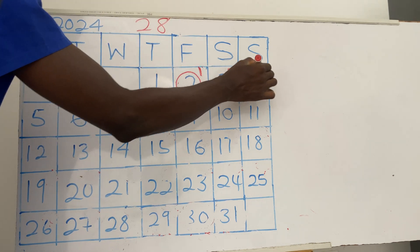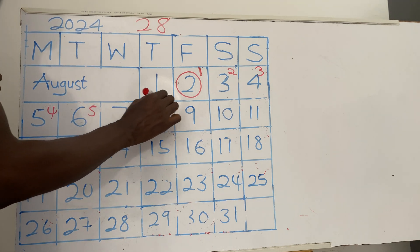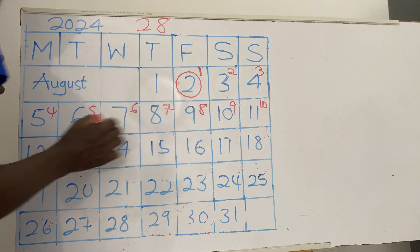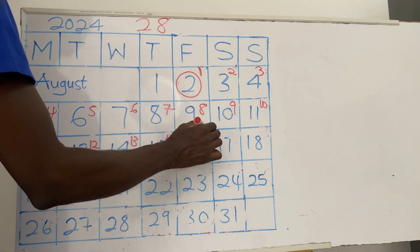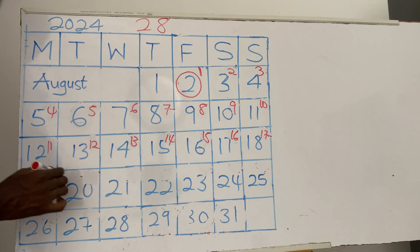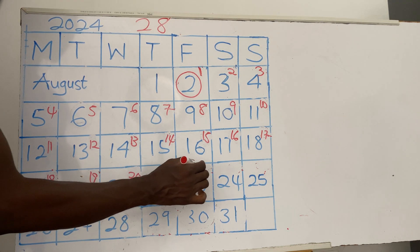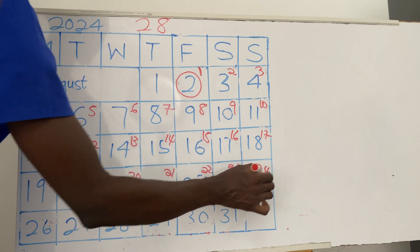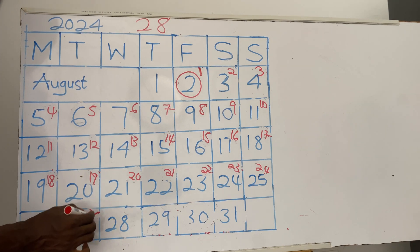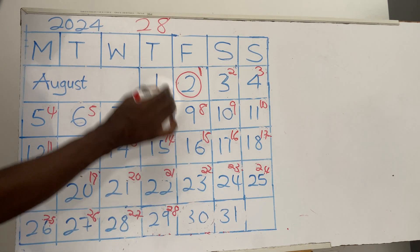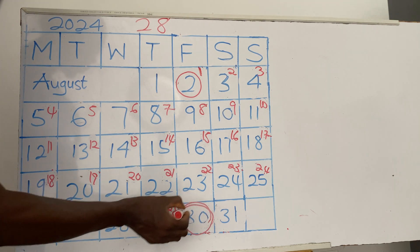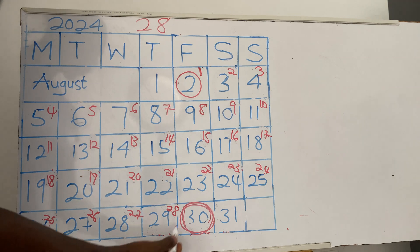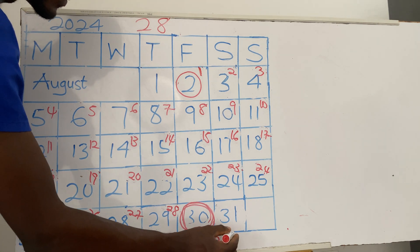You count from day one — the 2nd of August — up to 28 days: 1, 2, 3, 4, 5, 6, 7, 8, 9, 10, 11, 12, 13, 14, 15, 16, 17, 18, 19, 20, 21, 22, 23, 24, 25, 26, 27, 28. That is your cycle length. Your next period start is the day after the cycle length. So the next time you menstruate — when your menses will start — is the 30th of the month. That becomes your next period start date.